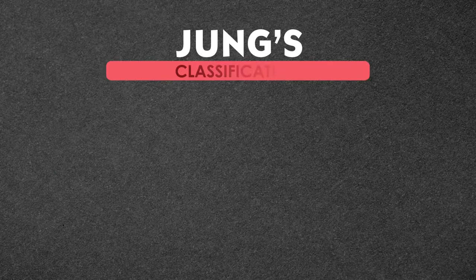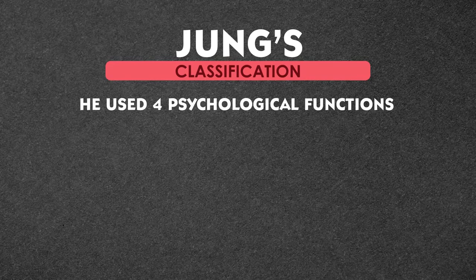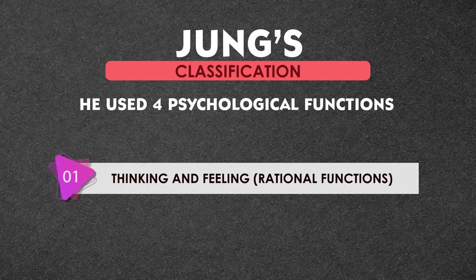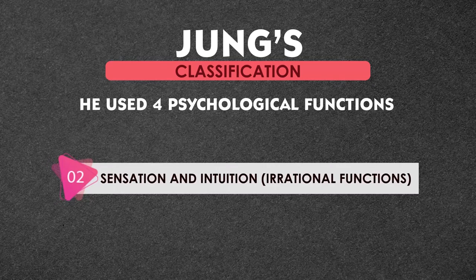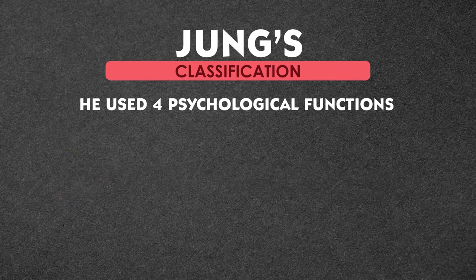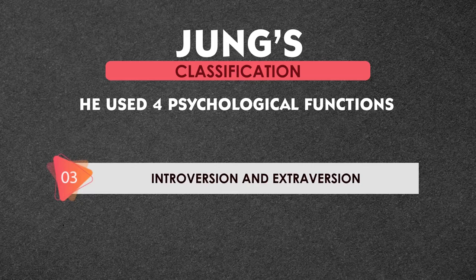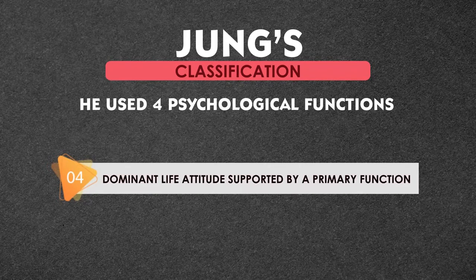The last classification is given by Jung. He used basically four kinds of psychological functions to divide people into various types. First, thinking and feeling — rational functions. Second, sensation and intuition — irrational functions. Third, introversion and extroversion. And the last one: dominant life attitude supported by a primary function.